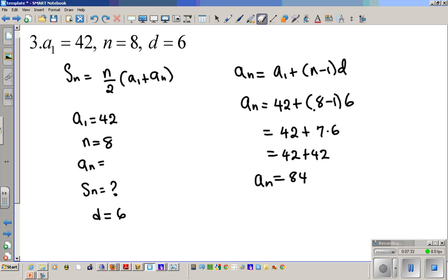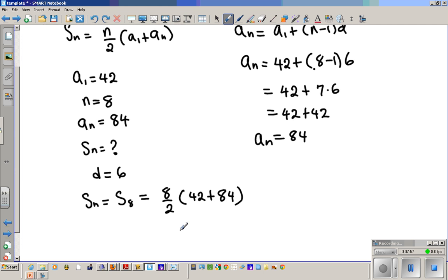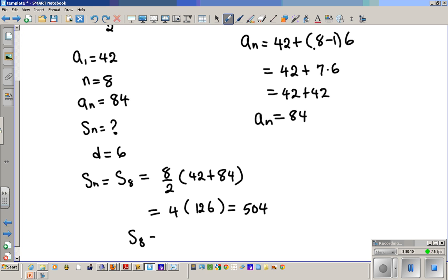We have one equation, one unknown. Now we can solve it for that one unknown, which is SN. So SN in this case, we're summing 8 terms, because N is 8. S8 is going to be N over 2, which is N over 2, times A1 plus AN, 42 plus 84. And that's going to be, N over 2 is 4, 42 plus 84 is 126. And when we multiply 126 by 4, we get 504. So the final answer is 504. So that is the sum of the series with the information that we provided above.